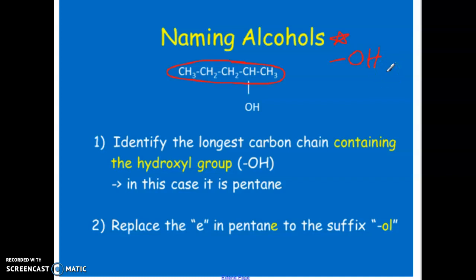So what does that mean? That means that when we are counting on our parent to decide the number for our branches, we will always start counting closest to where the OH group is. Even if I have a double bond on one side,